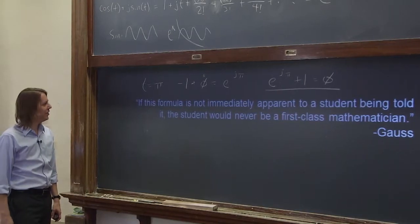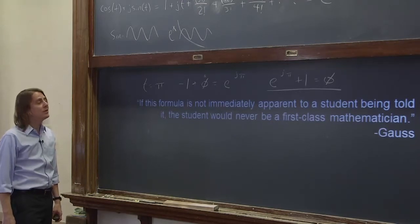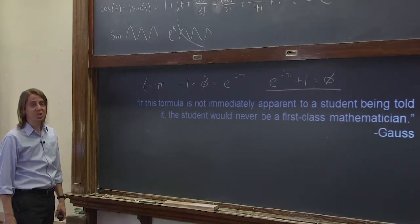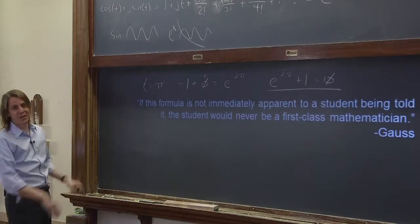And then here's something you may not have known. Gauss of Gauss's Law says, if this formula is not immediately apparent to a student being told it, the student would never be a first-class mathematician. So you may not have known Gauss was kind of a jerk. Or maybe he was just having a bad day. I don't know.